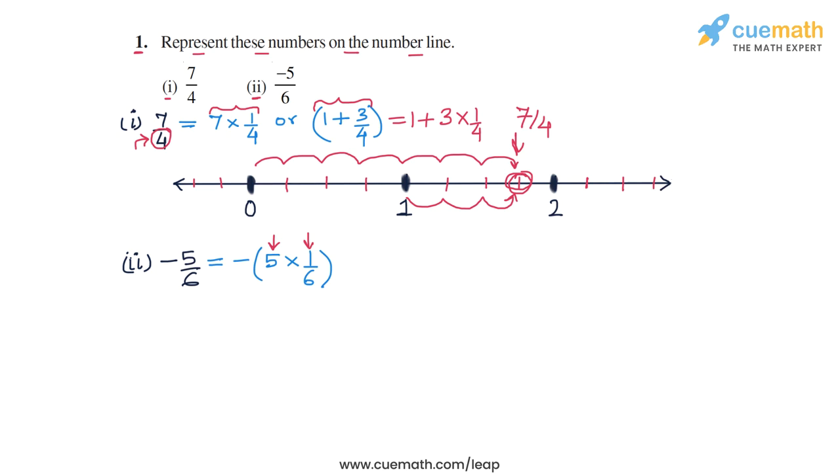So let's make a number line once again, and mark integers on this number line. So I have marked 0, minus 1, and minus 2. And now we see that the denominator of minus 5 by 6 is 6. So what we need to do is divide each integer interval into 6 equal parts because the denominator is 6. So when we do that, we will get these additional markings between each pair of adjacent integers, which divide each unit interval into 6 equal parts.